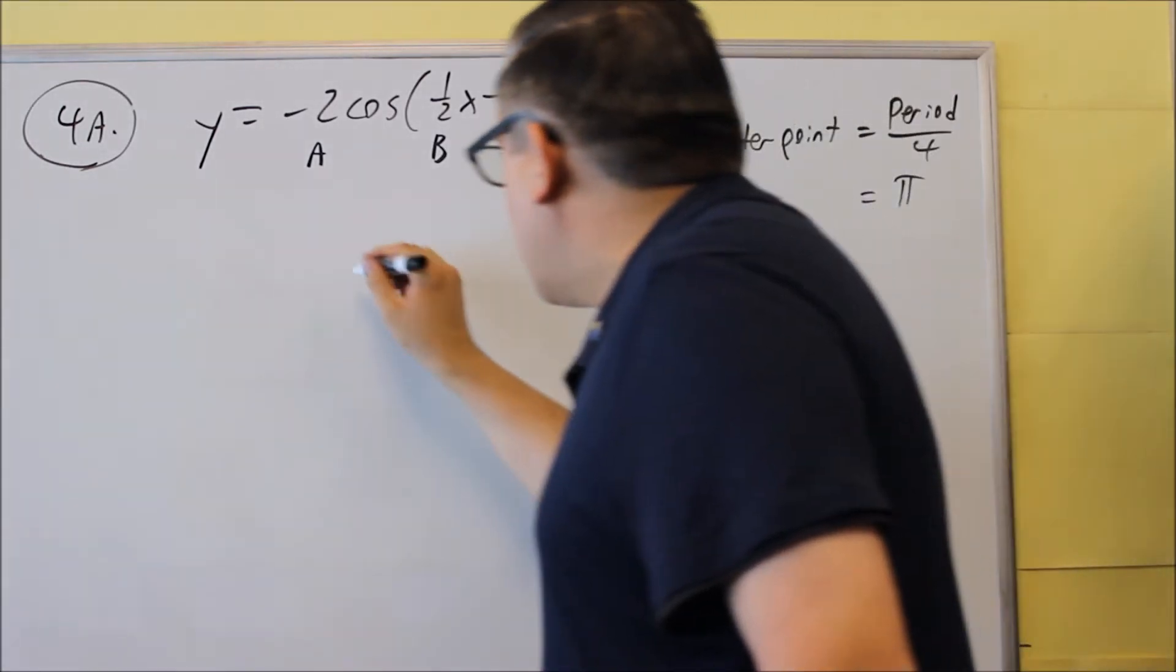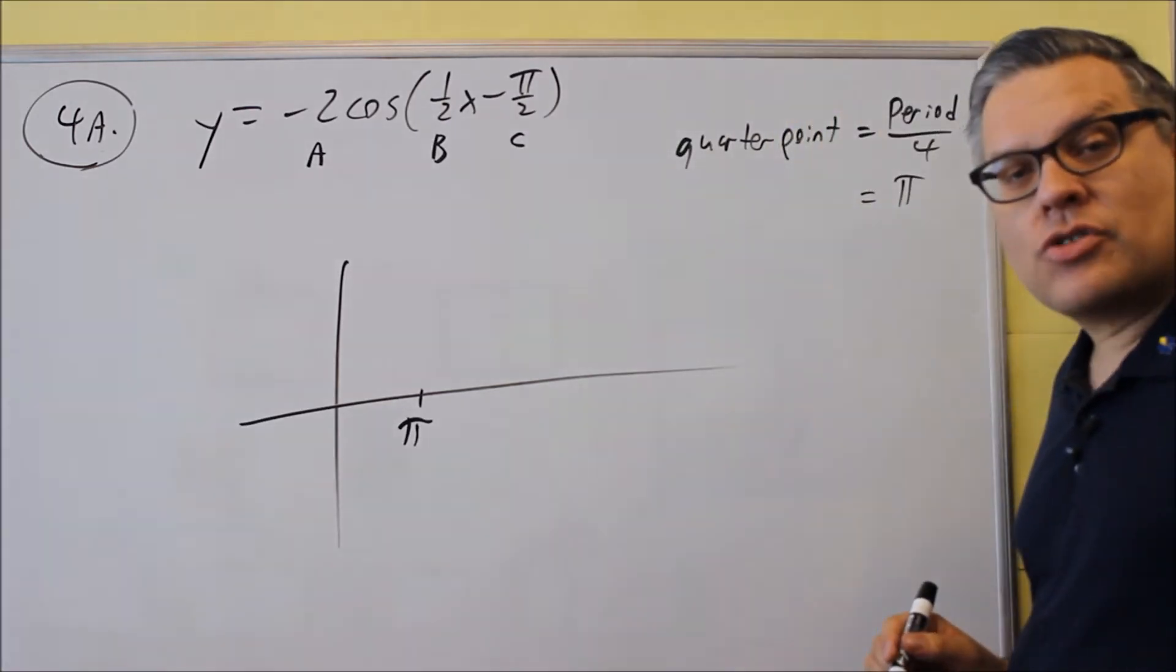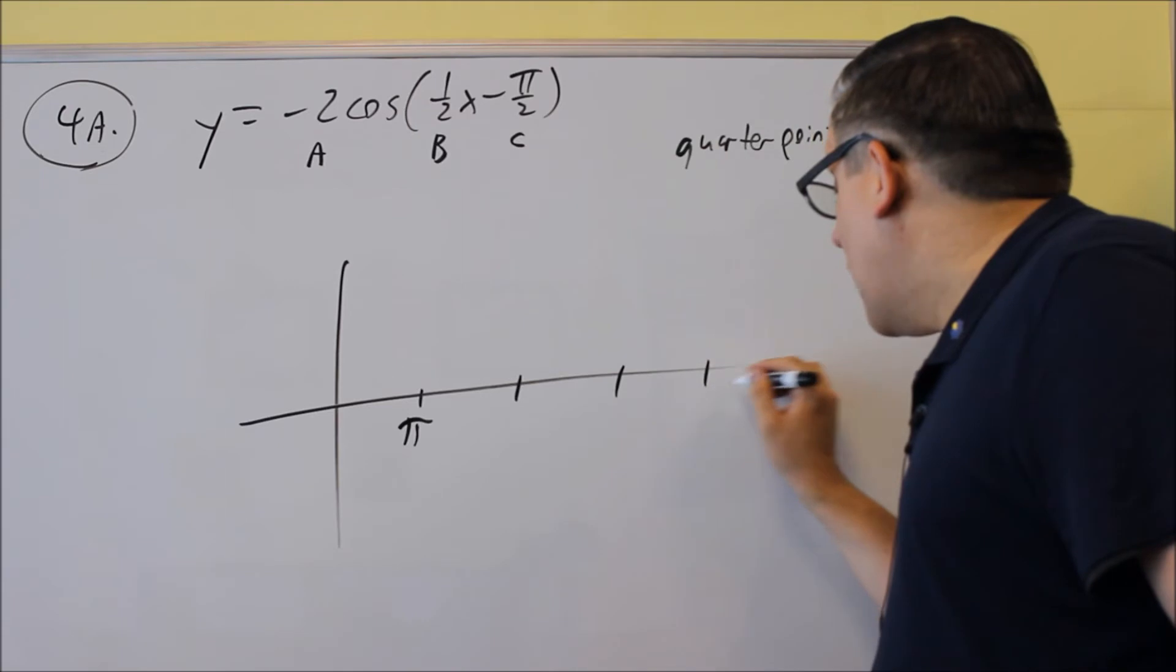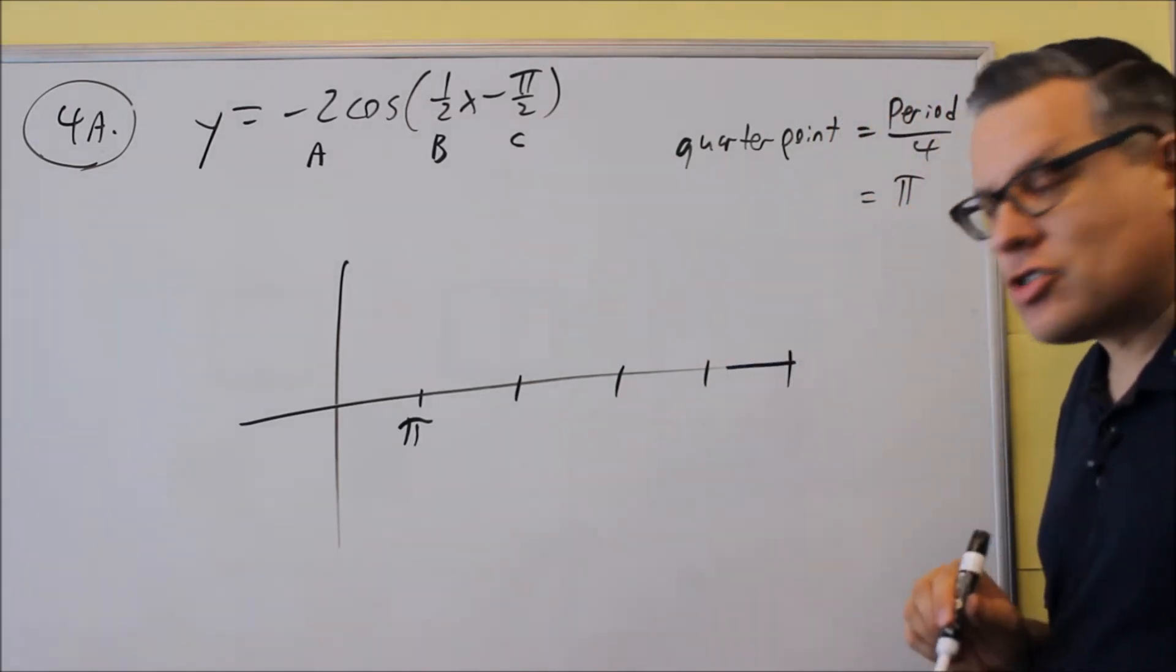Okay, now we said that the phase shift was π, so π is always your first key point. Now, whenever you do a graph, you have to show a total of five key points. That's the first one we already found because that's the phase shift.